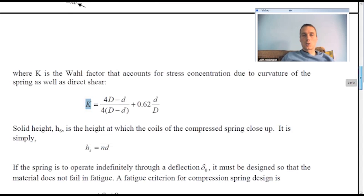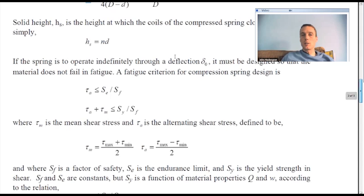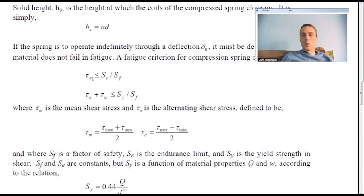These are the fatigue criteria here. So the material does not fail in fatigue. These are the mean stress tau M and then tau A is alternating shear stress. And those are all defined here. The tau max, tau min divided by two, that's the mean. And then the alternating shear stress, we're going to have tau max minus tau min divided by two.